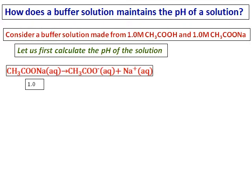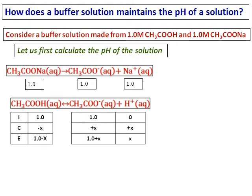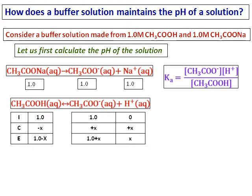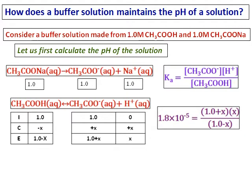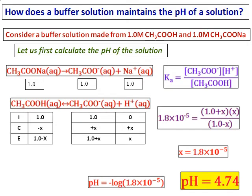Set up the equation. Sodium acetate ionizes and therefore the concentration of acetate increases. In this ICE table, we are starting with 1.0 acetate concentration. After setting up the ICE table, substitute the values into Ka and I get the pH of the solution as 4.74.